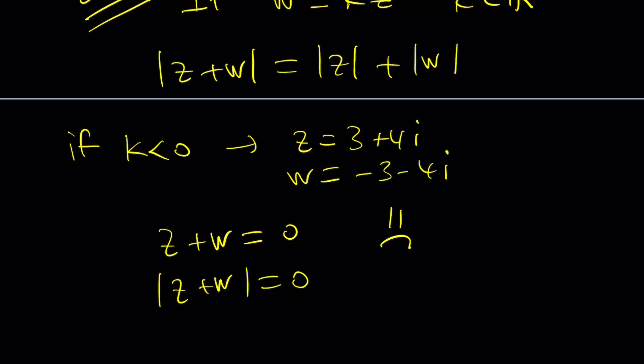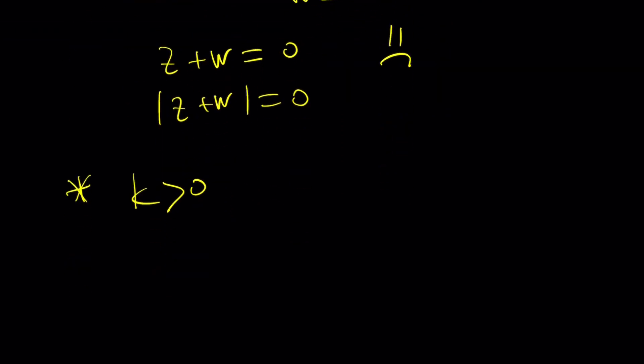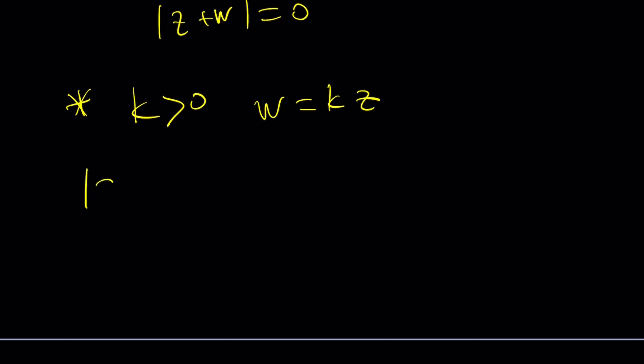but the absolute value of Z and W, their sum is not going to be 0. It's going to be 10. So K needs to be positive. And let's go ahead and take a look. So K is positive. W is equal to KZ. K is a real number. Now let's go ahead and prove that this is actually going to equal the sum of the absolute values. Ready? Let's go. I'm going to replace W.